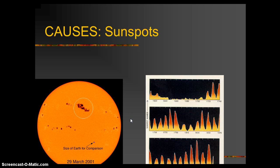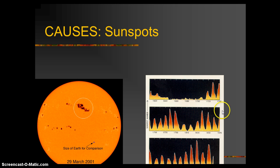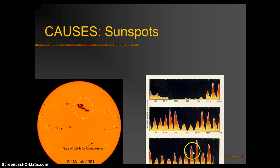We don't exactly know why sunspots build up and go away. We know that sunspots are connected to the magnetic field lines on the surface. We can't predict when they're going to happen, where on the surface they'll occur, or how big they'll be. But we do notice a trend. The graph shows dates along the bottom and the number of sunspots up the side. You can see a peak and dip pattern — peaks represent times when the sun is covered with sunspots, and the valleys are times when it's quiet.